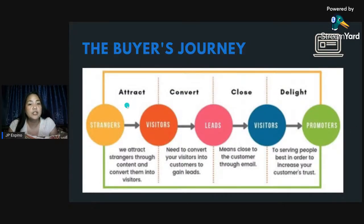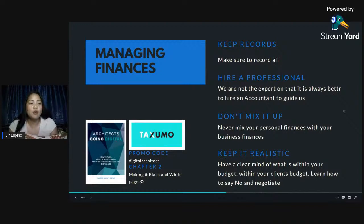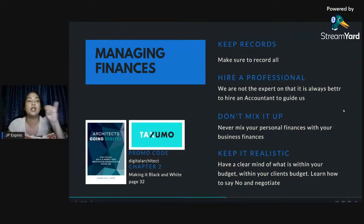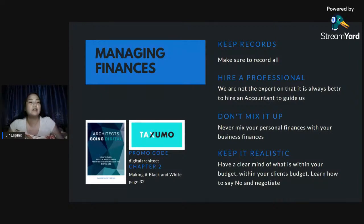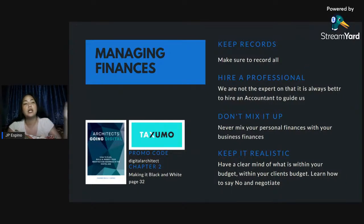So the buyer's journey goes: Attract, Convert, Close, and then Delight. That's Part 2. Next part of the startup — you've already covered Business and Management, then Marketing, and now Managing Finances. As I mentioned, I'm weak at managing finances — CJ handles all our finances. What I can suggest is: always have records on everything. From the time you make a proposal, to when the deal closes, to when the contract is ongoing — keep good records of it.